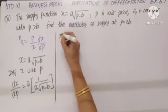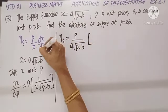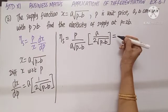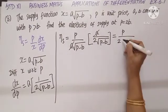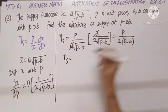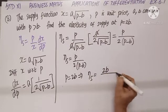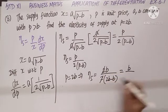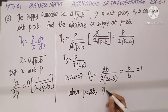Substituting into eta_s equals p by x times dx by dp: we get p divided by a√(p − b) times a by 2√(p − b). The a's cancel, and √(p − b) times √(p − b) gives (p − b), leaving eta_s equals p by 2(p − b). At p equals 2b: eta_s equals 2b by 2(2b − b) equals 2b by 2b, which equals 1. So when p equals 2b, eta_s equals 1.